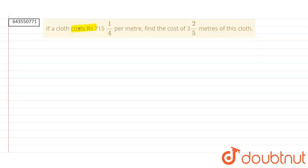The question is: if a cloth costs rupees 715 and 1 by 4 per meter, find the cost of 3 and 2 by 5 meters of this cloth.